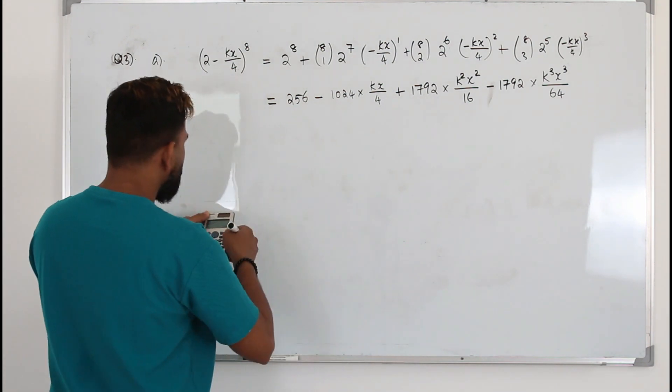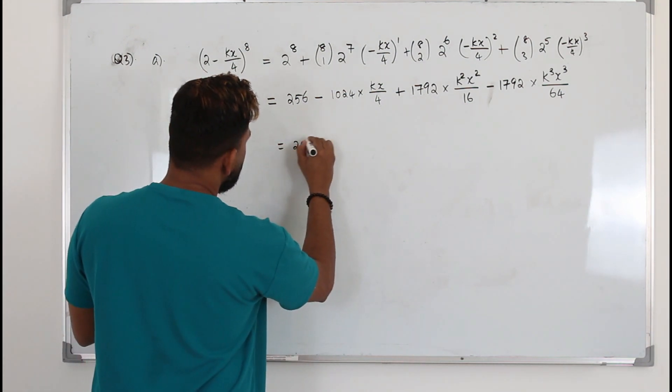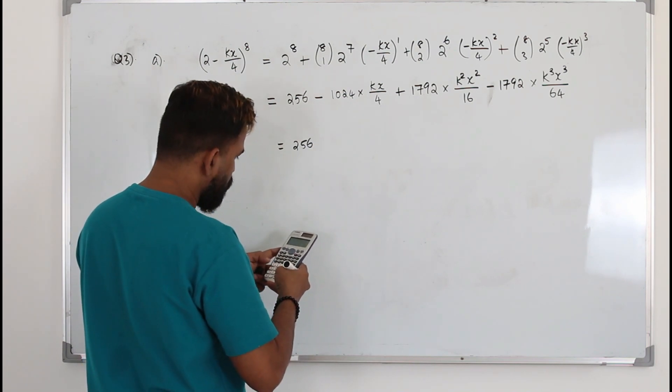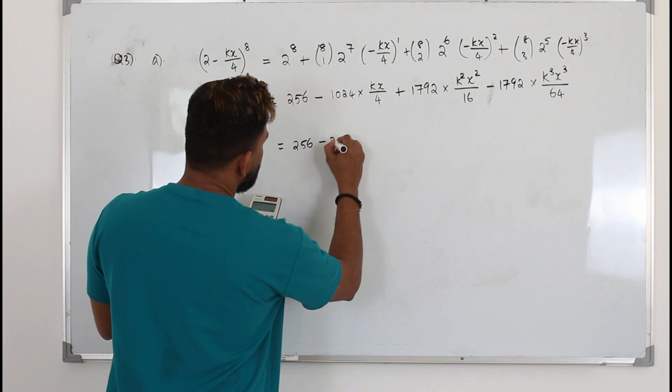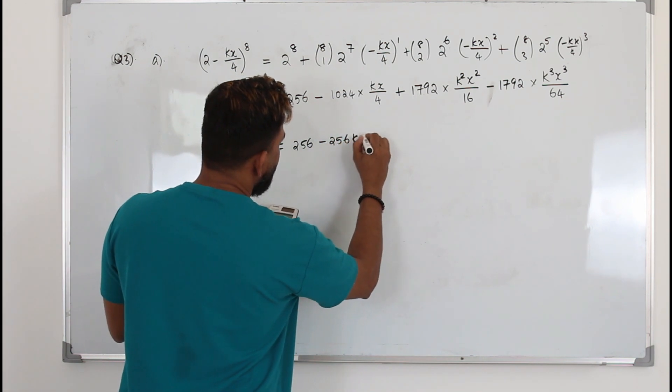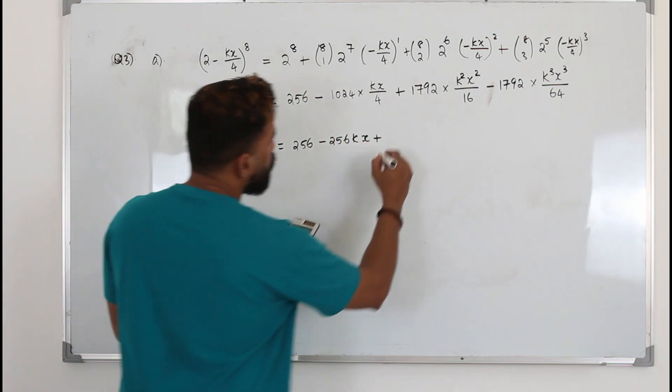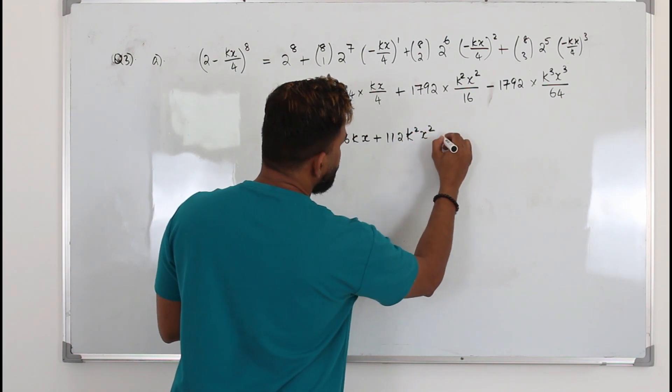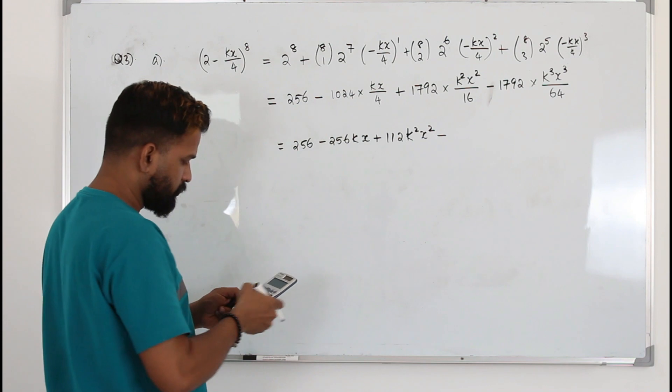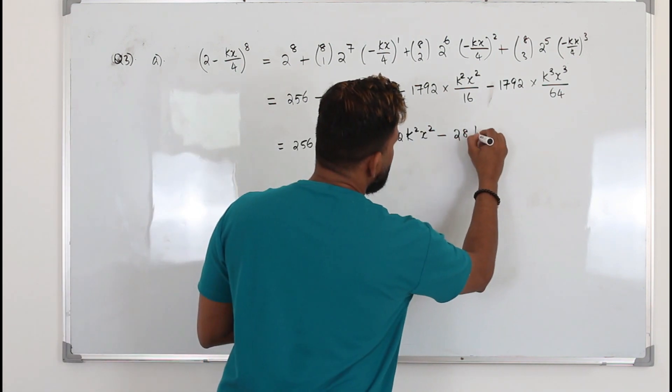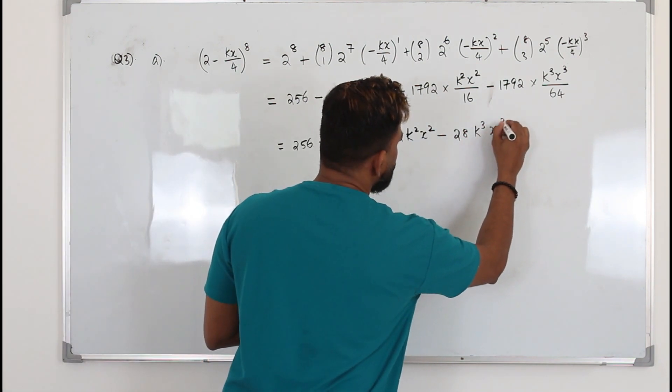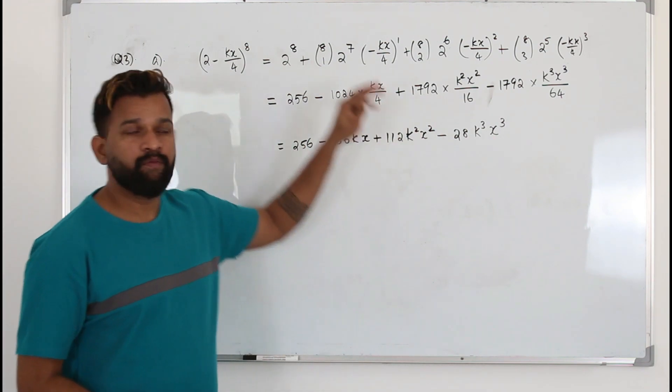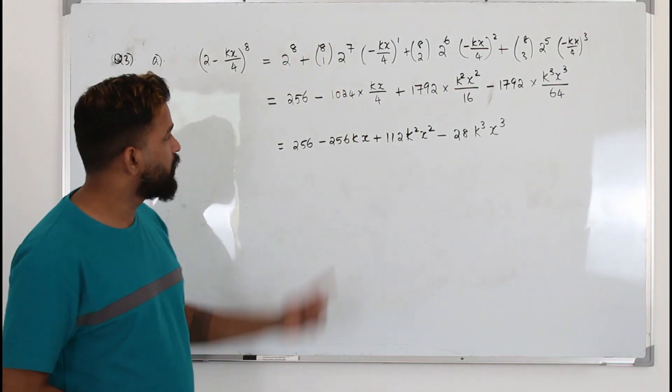Now we need to simplify this. So we get 256 minus 256kx plus 112k^2x^2 minus 28k^3x^3. So we got the first four terms of this binomial expansion, that's part A.